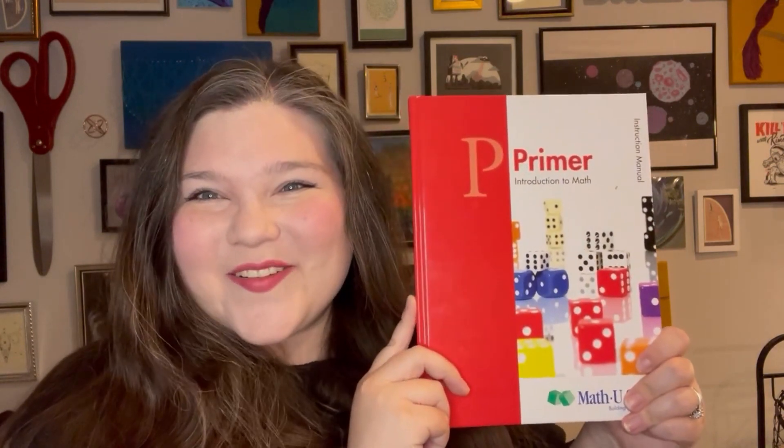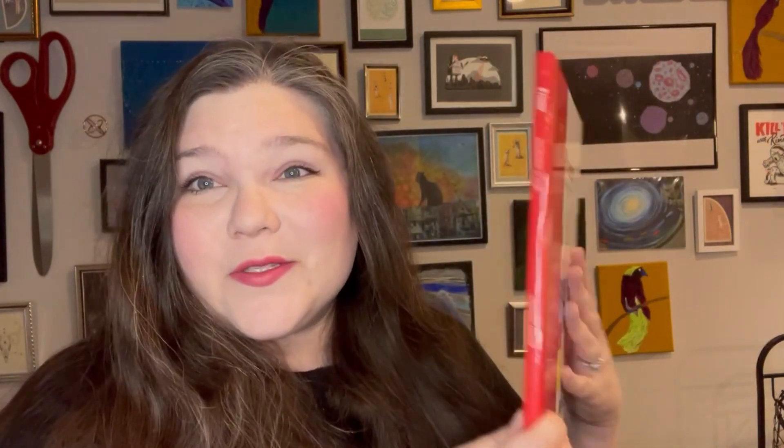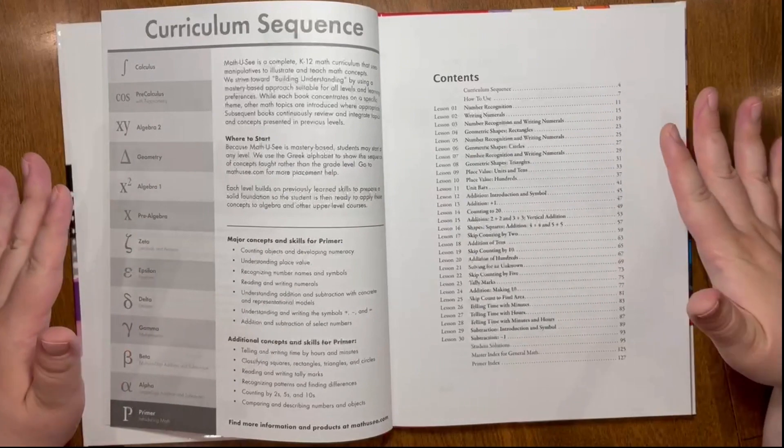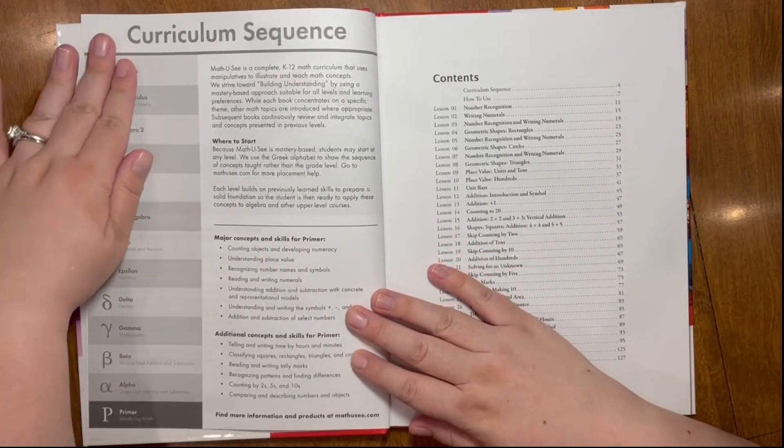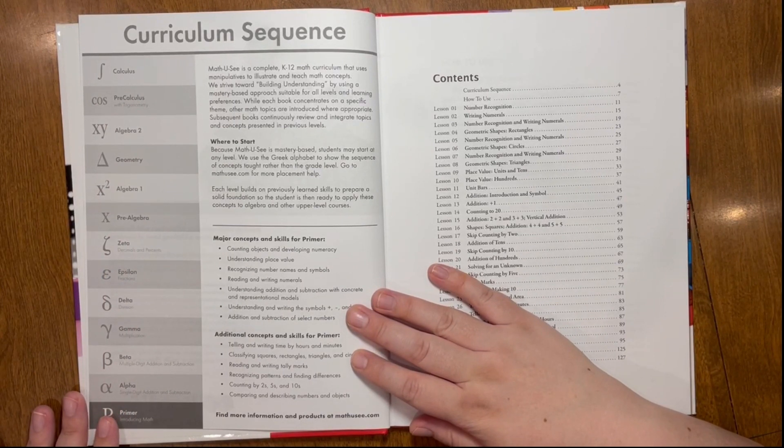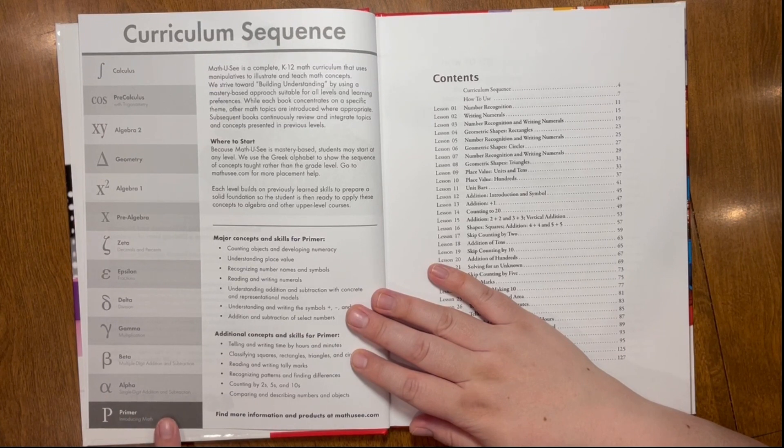The level that we're on is the primer level and I just thought I would share a little bit about what this looks like at this level, the different lessons that they have, and how we are going to go about using it. The first thing that I wanted to share with you guys is the teacher manual. As far as teacher manuals go for homeschool curriculum, this one isn't that bad. It's pretty thin, all things considered.